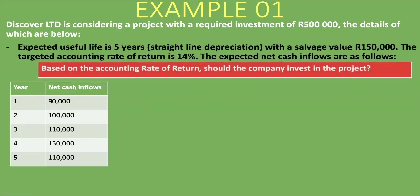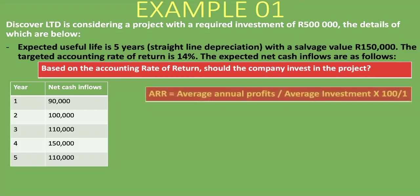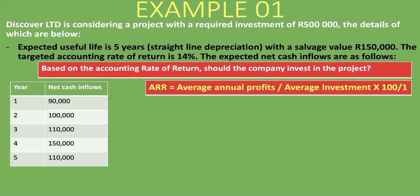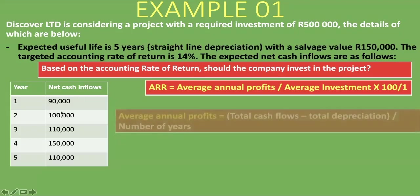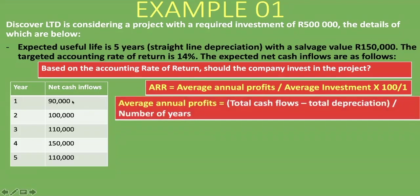We are asked: based on the accounting rate of return, should the company invest in the project? To answer that, we need to calculate the ARR. The formula is average annual profits divided by average investment, multiplied by 100. We have net cash inflows, so we need to work backwards to profits. We take all the cash flows from year one to year five, deduct the total depreciation, then divide by the number of years to get the average annual profits.